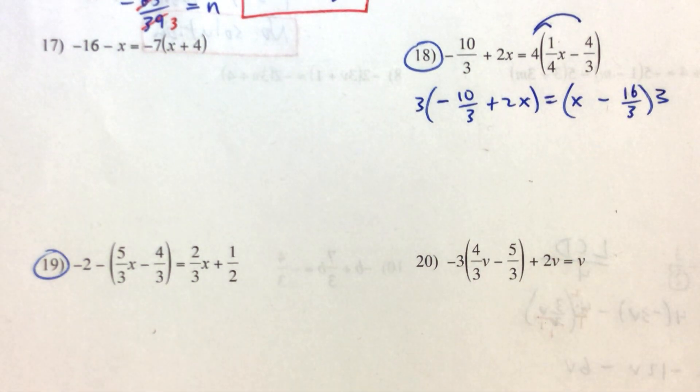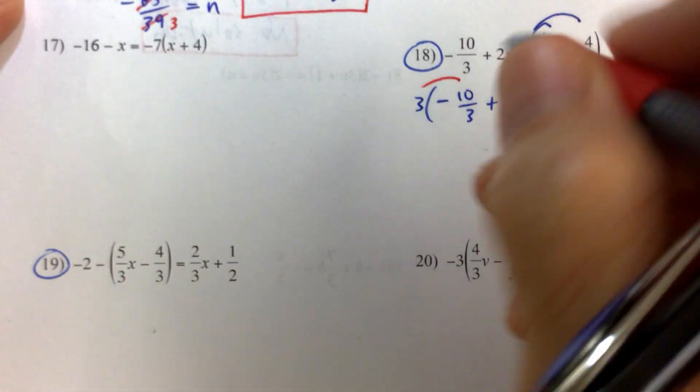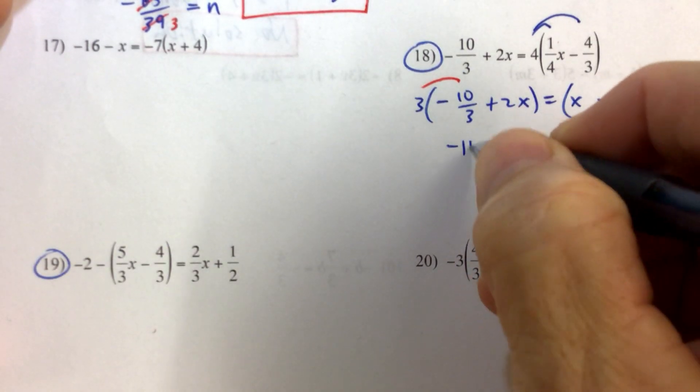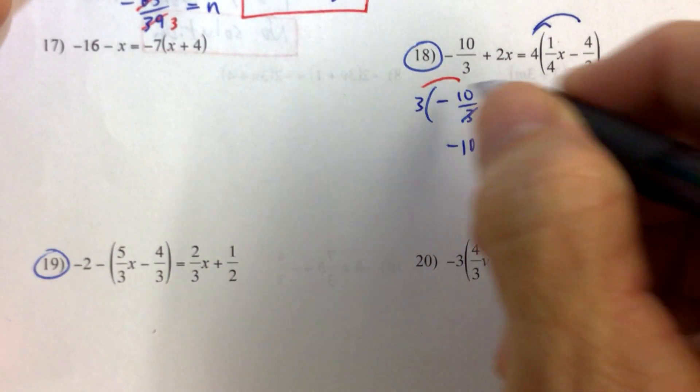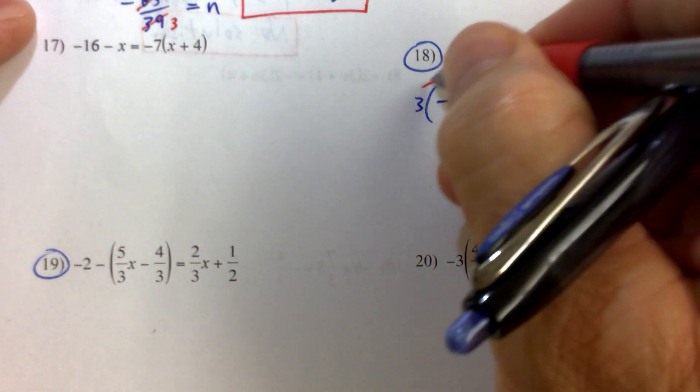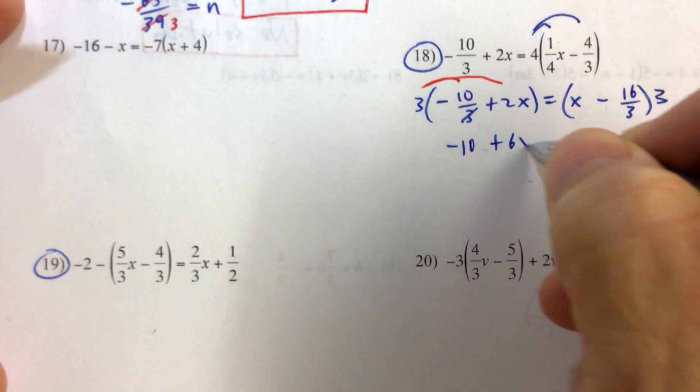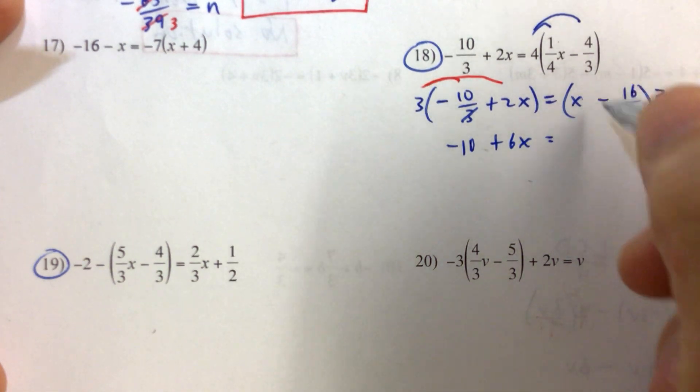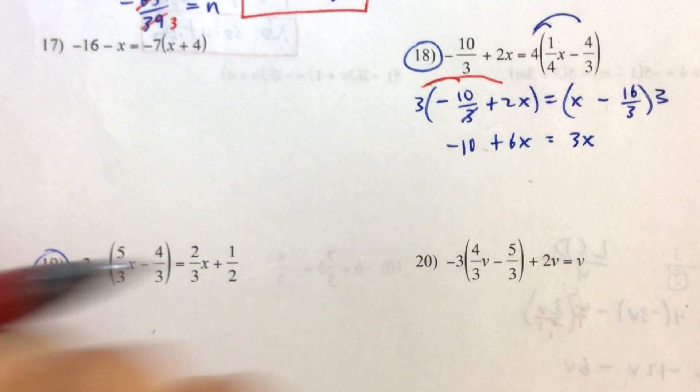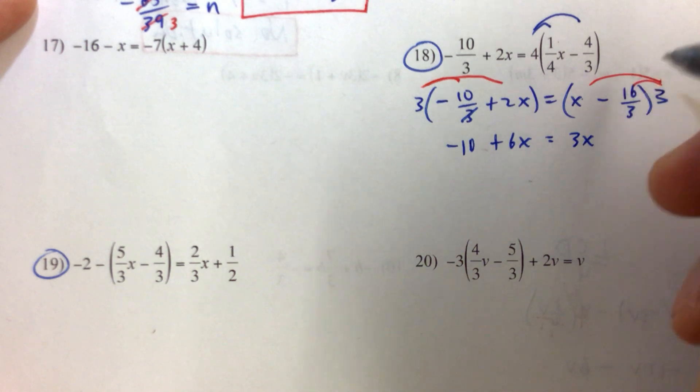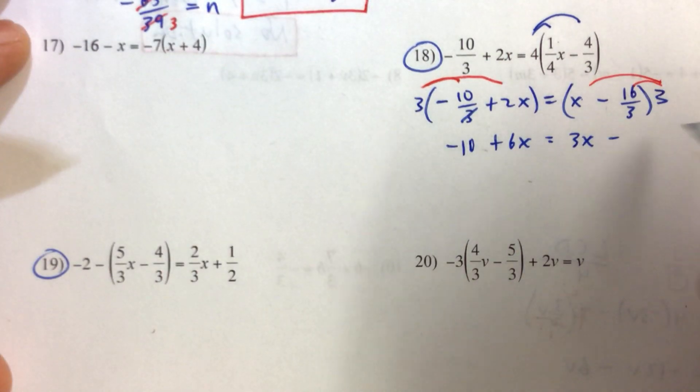If we distribute the 3 to negative 10/3, we just get negative 10 because the 3 cancels. 3 times 2x gives us 6x. Equals 3 times x, 3x. And then we have 3 times negative 16/3. We'll put the minus there, so we don't have to worry about that. 3 cancels there, we just get 16. So that's kind of nice.